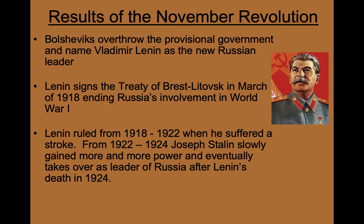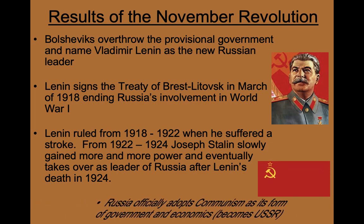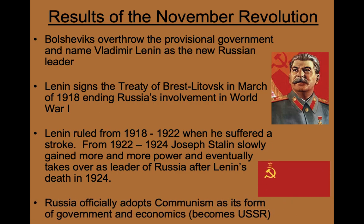During this time, Stalin would be a brutal dictator and he would rule Russia as a communist country where all of the country's land, goods, and resources were controlled by the Russian government. There were no private citizens able to run businesses — all businesses were run by the government and with the government's ruling and permission.